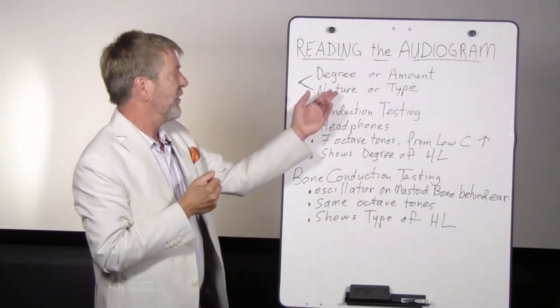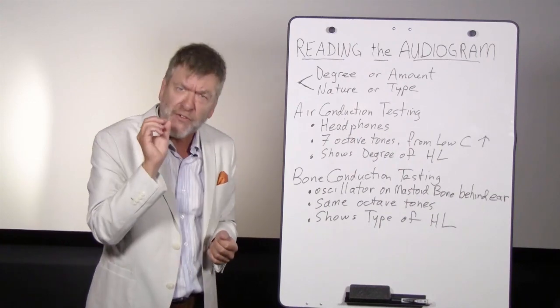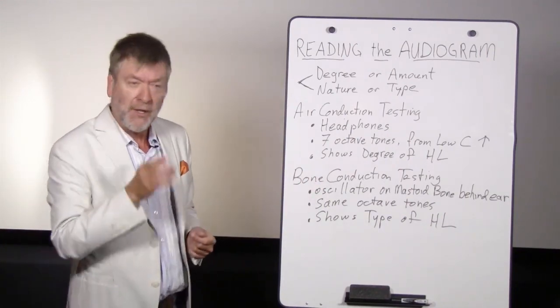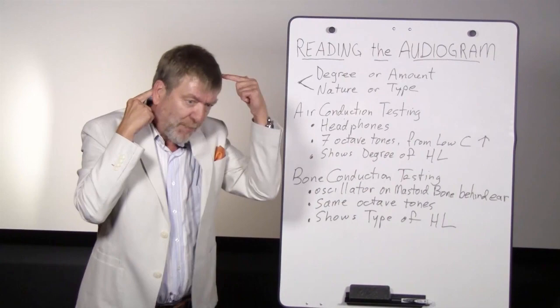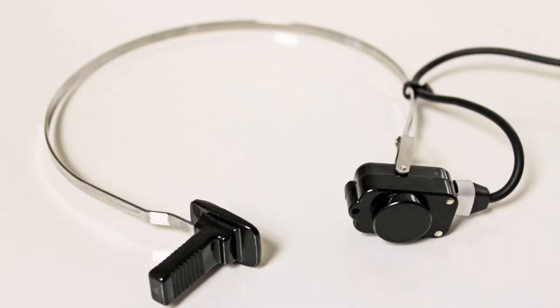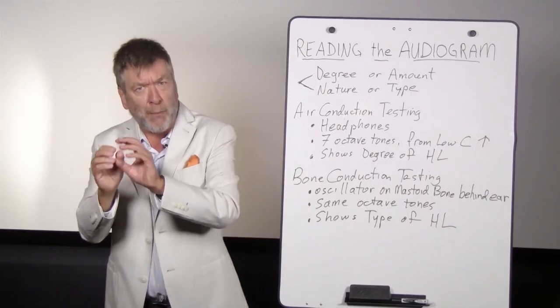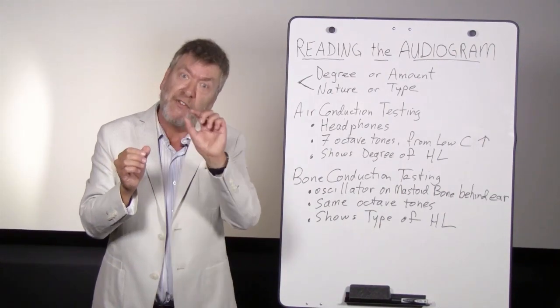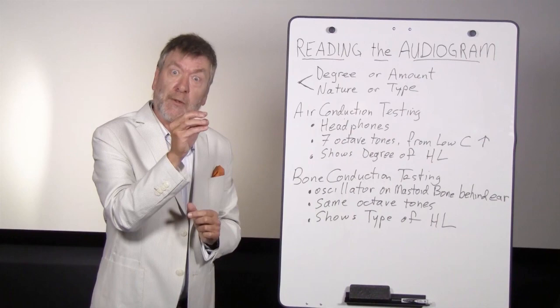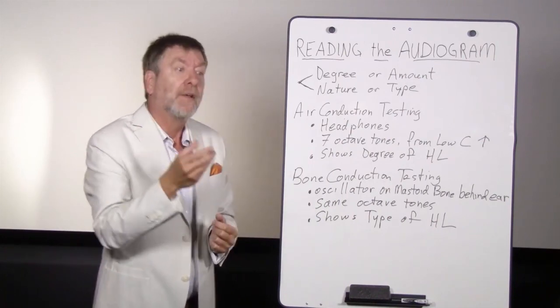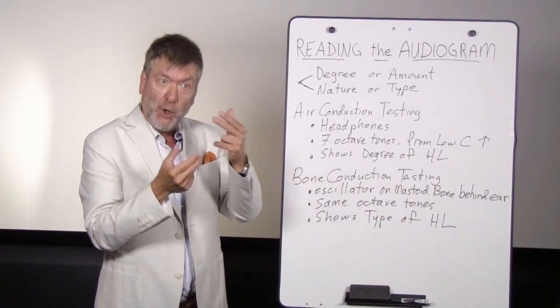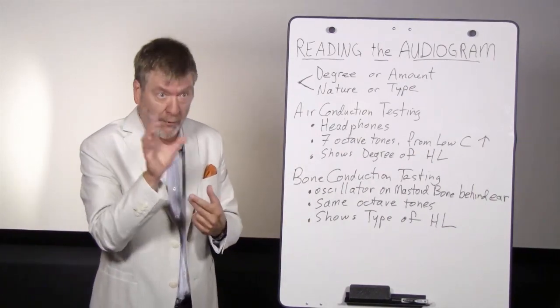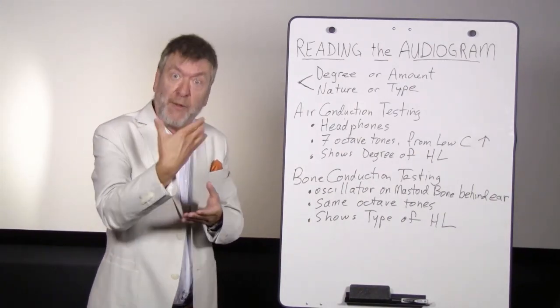The second part of the hearing test is to show the nature or type of hearing loss. And this is done by bone conduction testing. With bone conduction testing, we're placing an oscillator, a little black box with a headband, and we're placing that oscillator on the mastoid bone behind the patient's ear. It's important to note that with bone conduction testing, you are bypassing the outer and the middle ears, and you're sending sounds straight through the skull to the inner ear or cochlea by bone conduction. So the results of bone conduction are compared to the results of air conduction. And that helps us get an idea of what role the outer or middle ear is playing in the patient's hearing loss.